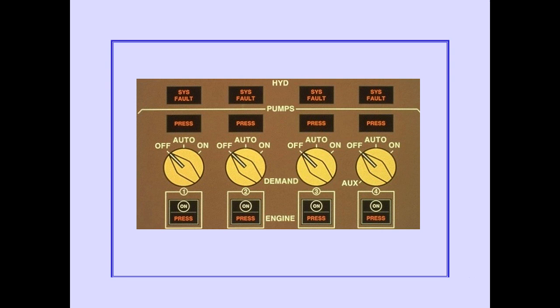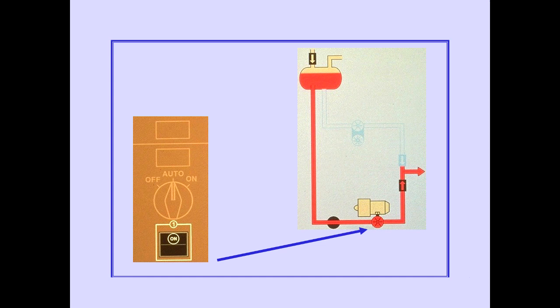Let's now discuss the controls and indicators for each system. Since the controls and indicators are similar for all four hydraulic systems, we will discuss only one system. The engine pump switch allows the pump to pressurize its associated system. It is normally in the on position.